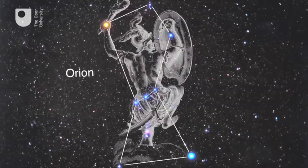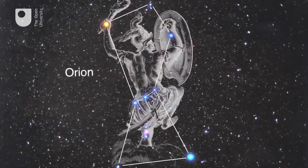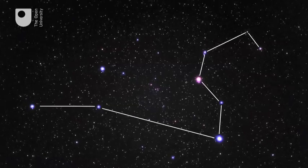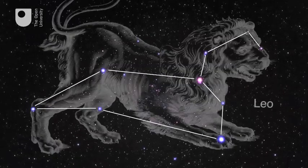These Ptolemaic constellations are often based upon figures from ancient Greek mythology or astrology, such as Hercules, Leo, and Orion the Hunter.